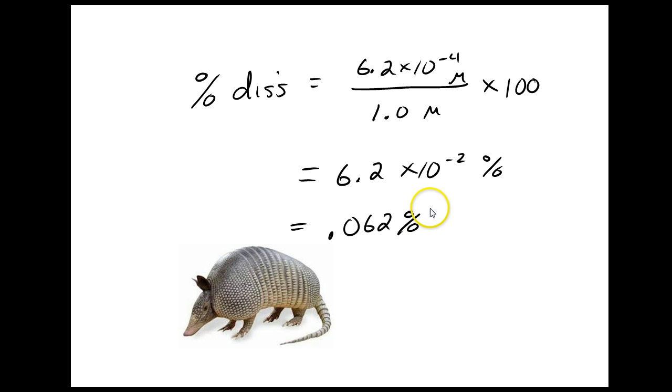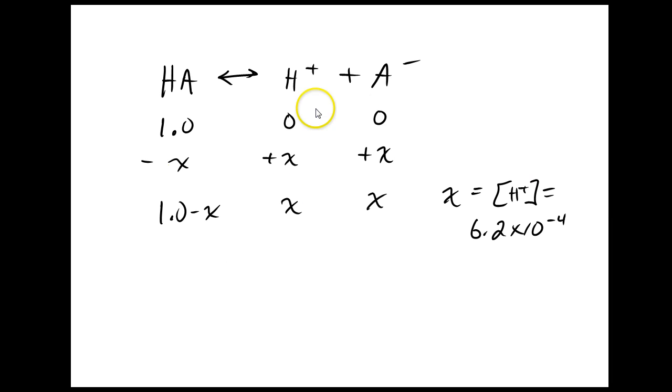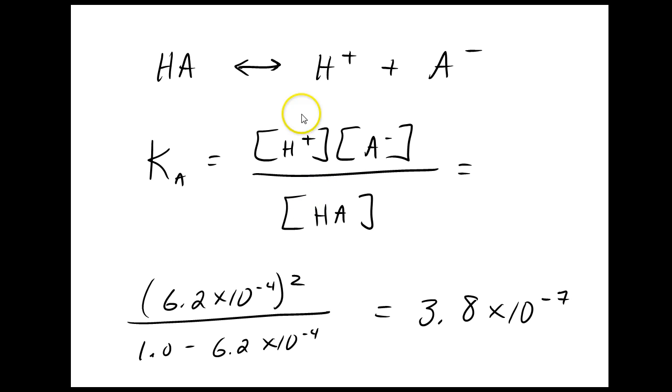You guys be careful on this percent dissociation. It's easy to multiply by 100 again because this is such a small number. You go, oh, I must have forgotten to multiply by 100. It must be 6.2%. So really use caution there. Then I'm going to icebox it, the usual icebox. This time, though, instead of setting this all equal to Ka and trying to solve for x, I already know what x is, and I'm just going to plug it in to get these equilibrium values. Then I write my Ka expression. Remember, these are all equilibrium values, and I'm going to put them in and get my Ka.